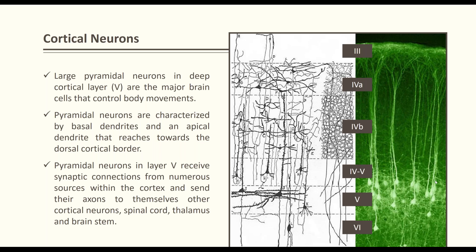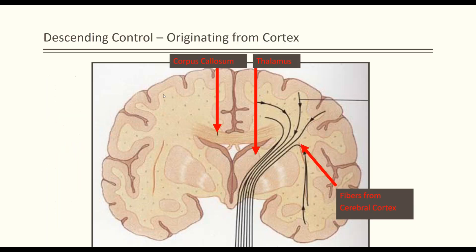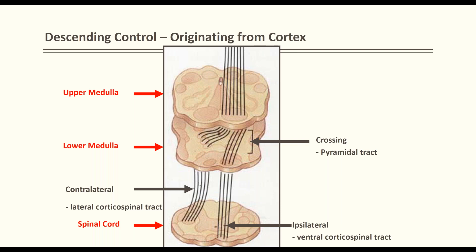Looking at the cross-section of the pathway, the foot area is at the midline and the hand area is lateral. Fibers from lower and upper extremity combine and pass medial to the thalamus — thalamic damage will not affect the motor pathway. They go under the corpus callosum, medial to the thalamus, and descend. As they descend, 80% of fibers cross over to the other side in the lower medulla, and 20% remain ipsilateral.